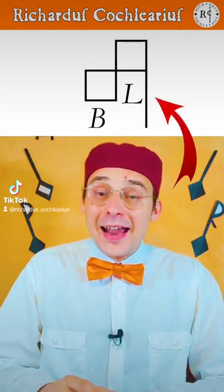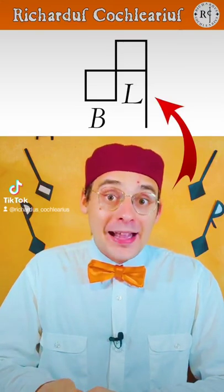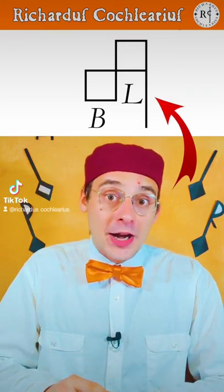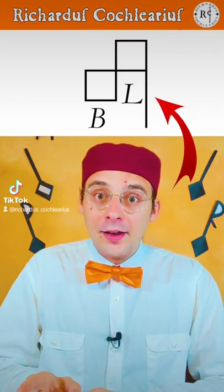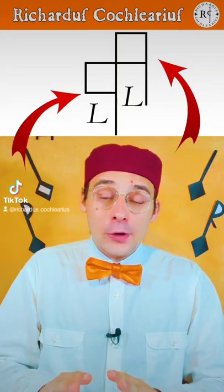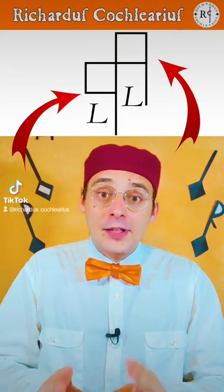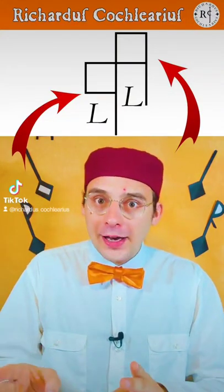If I add a right descending pilum at the second square, it becomes brevis longa. If I add two right descending pilum at the two squares, it becomes longa longa.